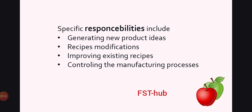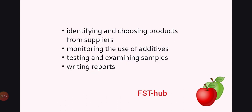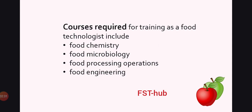The specific responsibilities performed by a food scientist include: generation of new product ideas and recipe modification, improving existing recipes, controlling manufacturing processes at production sites, designing processes and machinery for large-scale production, dealing with marketing staff, ensuring that strict hygiene and food safety standards are met, identifying and choosing products from suppliers, monitoring the use of additives — mainly chemicals — added in food products, testing and examining samples, and writing reports.